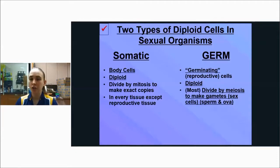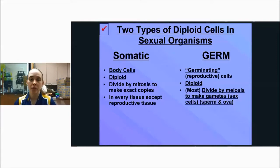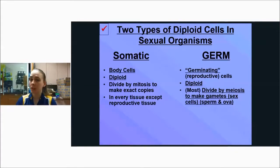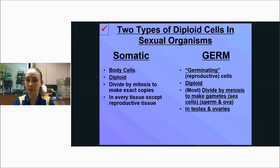Germ cells are the diploid cells that are your reproductive cells. They turn into either sperm or an egg. These reproductive cells are diploid, and they divide by meiosis to make your sex cells — sperm and ova, which is another term for the egg. They're located either in your testes, if you're male, or your ovaries, if you're female.